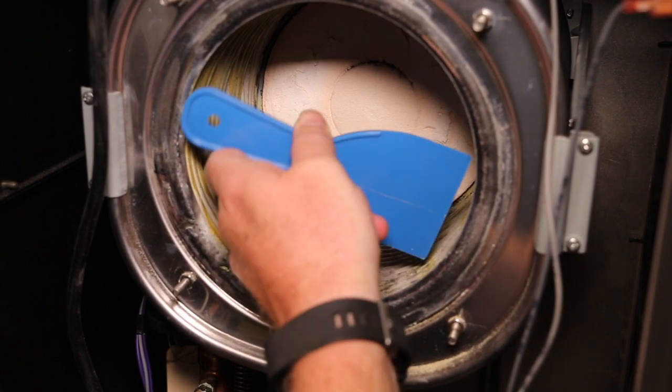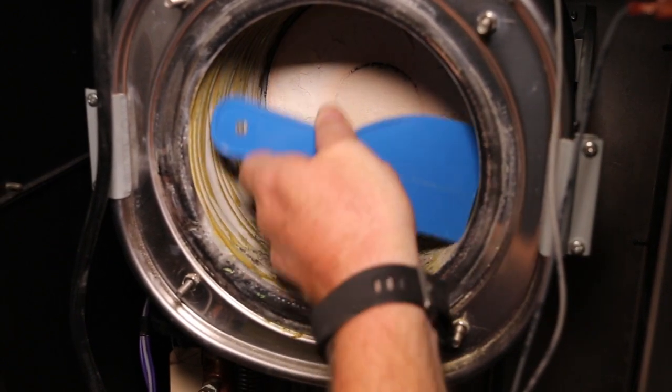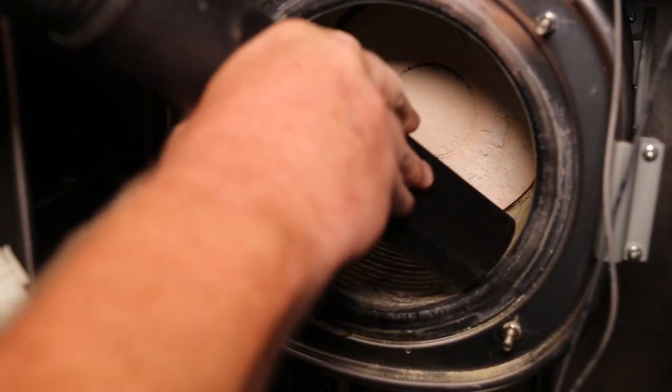Using a plastic putty knife, clean between the heat exchanger tubes all the way around the heat exchanger. Vacuum out loose debris.